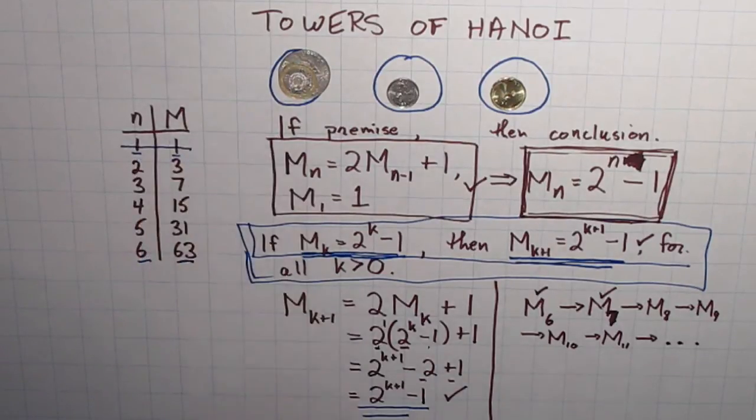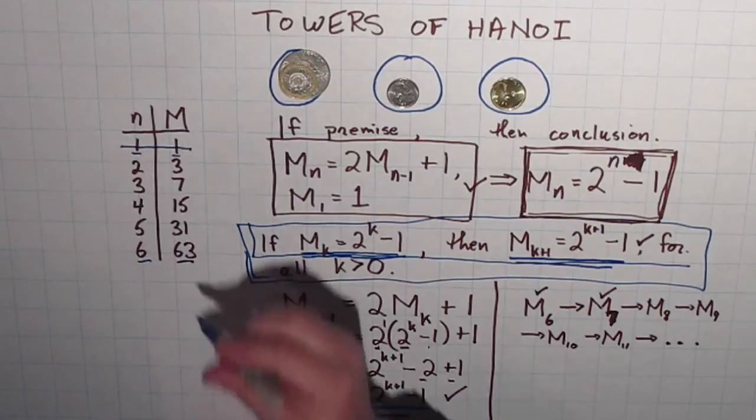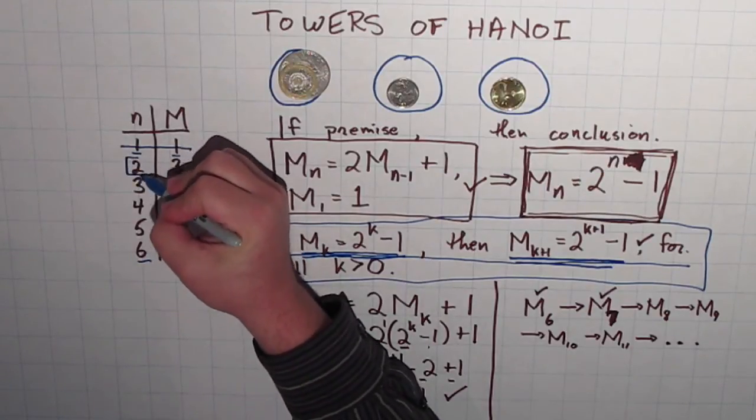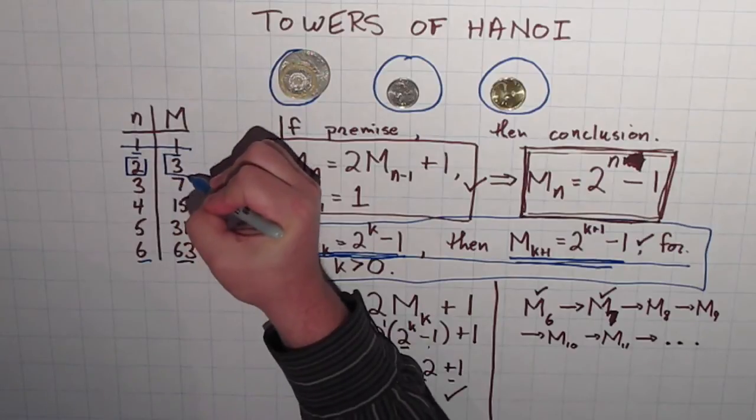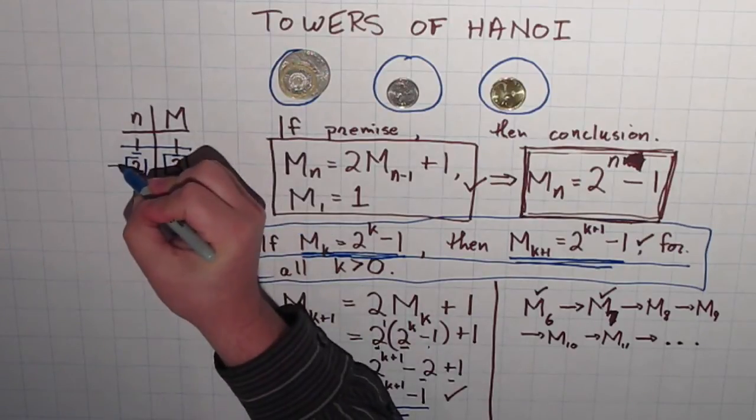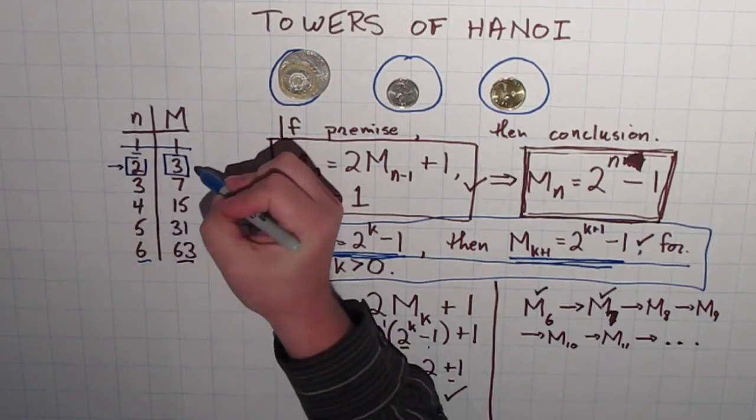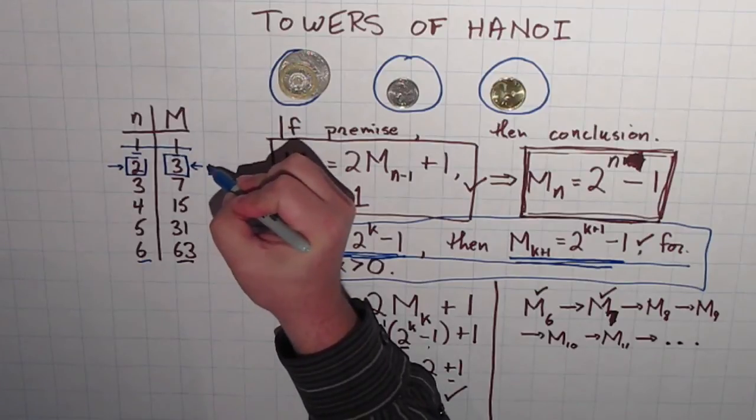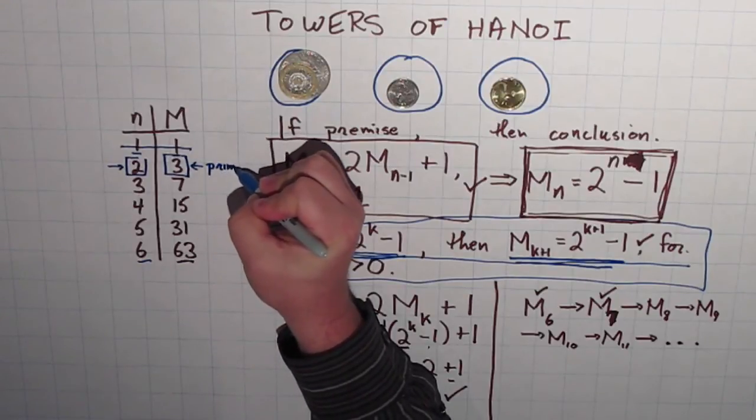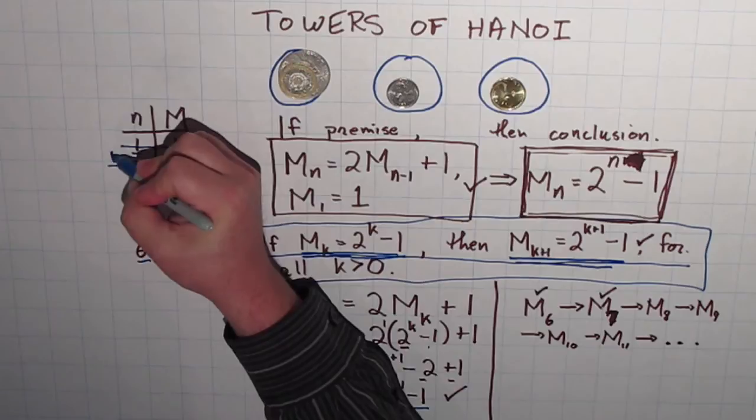I'm going to ignore the first row here. I'll get to why in just a second. And then I want to take a look at this number and this number. 2 and 3. And although it might not be completely obvious, both these numbers are prime. 3 is prime and 2 is prime.